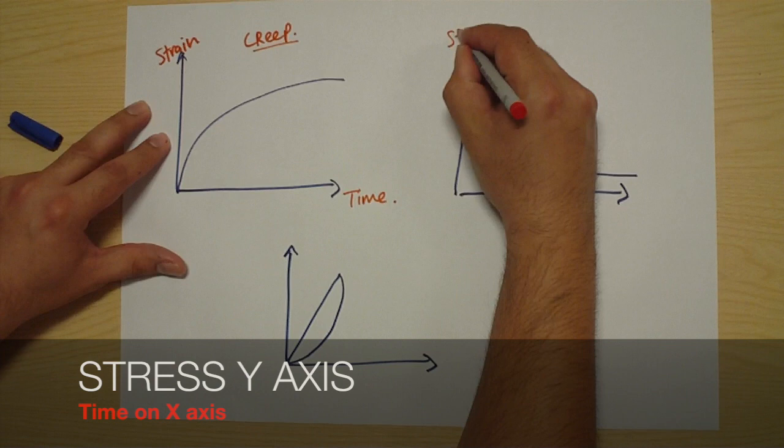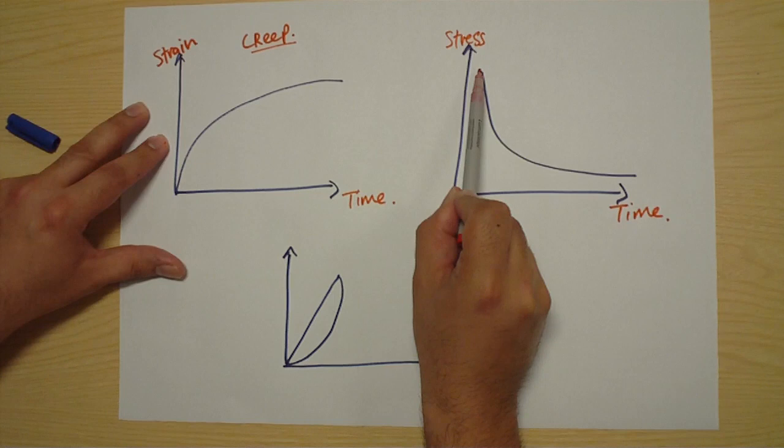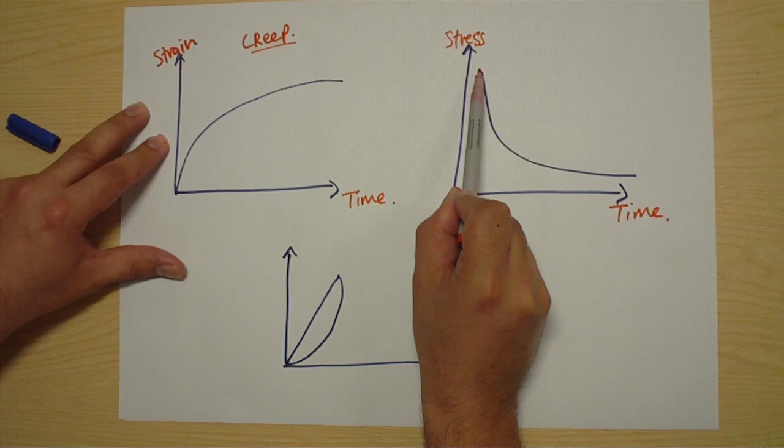So you have stress on the y-axis and time on the x-axis. The material is under a constant strain, and with time in that material, the stress reduces.